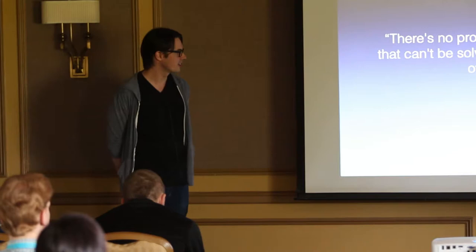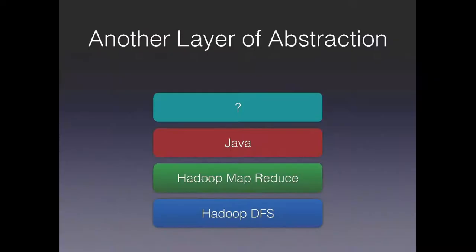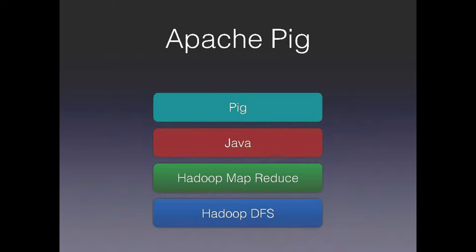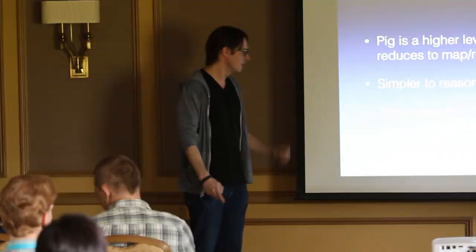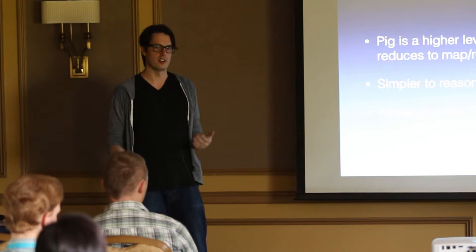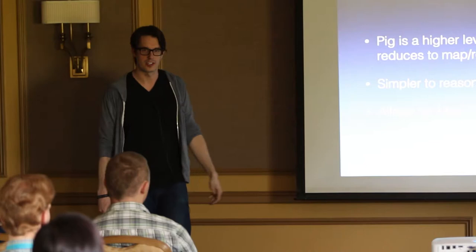The old axiom, there's no problem in computer science that can't be solved by adding another layer of abstraction. We went ahead and added another layer of abstraction on top. The first thing we tried was called Apache Pig. It's a project out of Yahoo. It's a declarative language that reduces to MapReduce queries. It's a little simpler to reason about. You don't have to take a problem and turn it into a MapReduce paradigm.